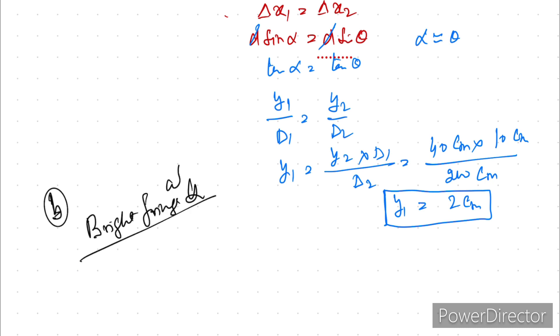For bright fringe at Q, you have a delta x1, whatever path difference in the first portion is there. That must be equal to the shifting due to the liquid poured, delta x2 and that is mu minus 1 into t. What is delta x1? Delta x1 is nothing but D sin alpha.